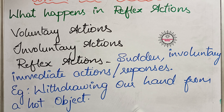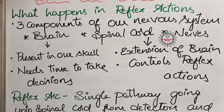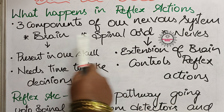These reflex actions are useful for saving an animal or a human being — they save us from dangerous situations. Our nervous system contains three components: brain, spinal cord, and nerves.